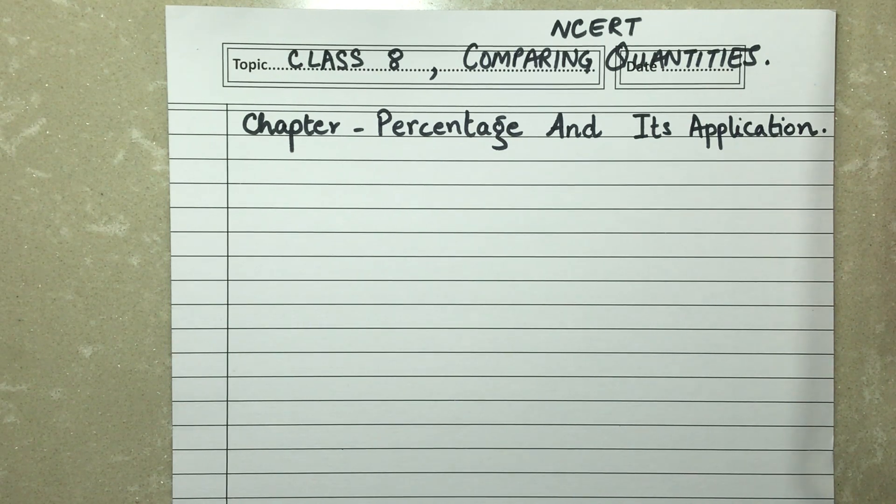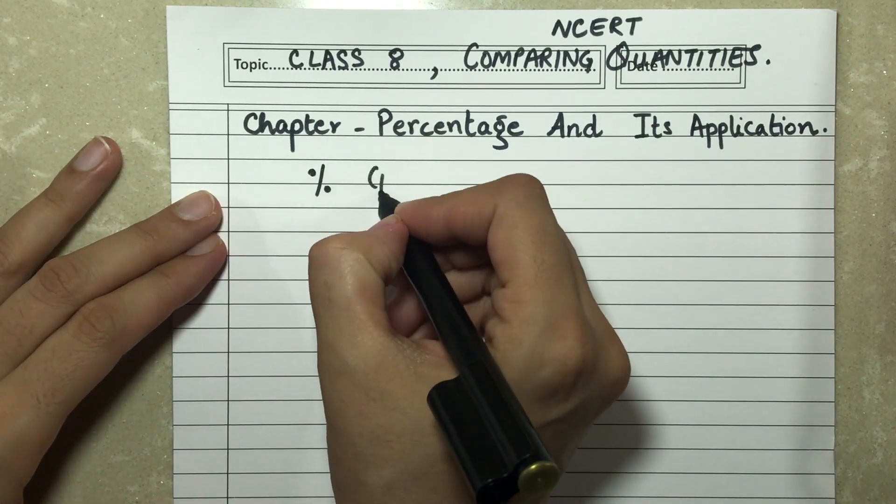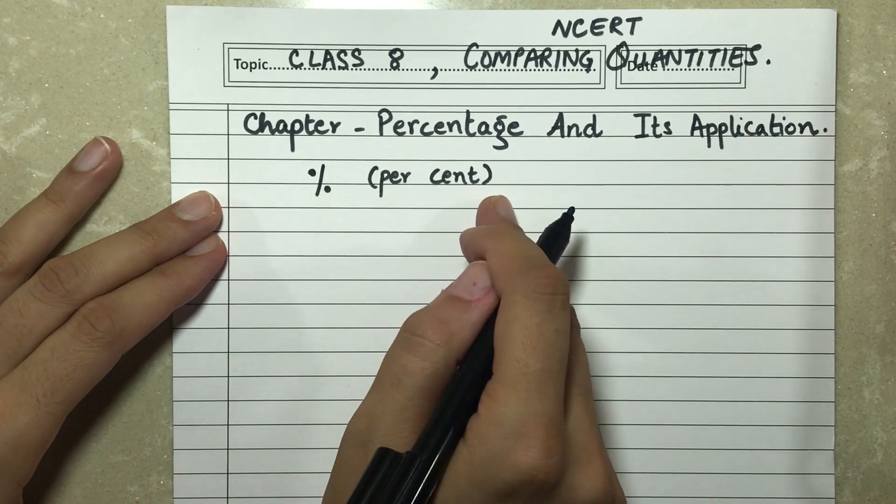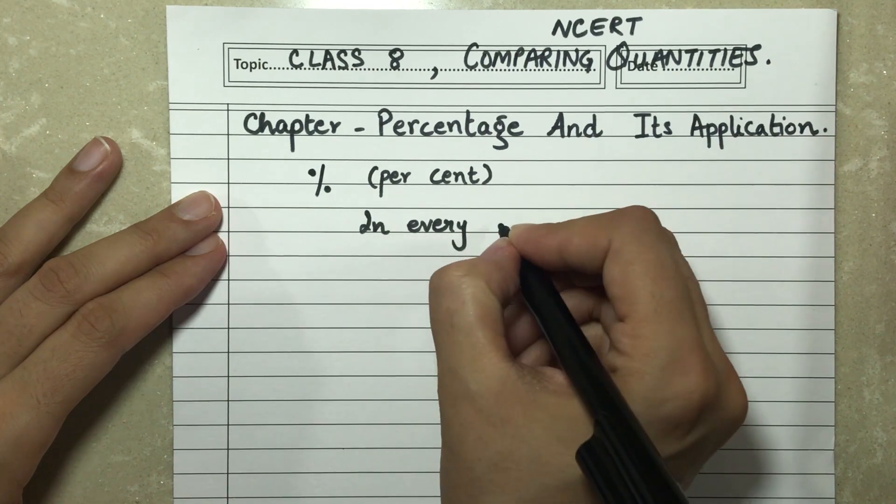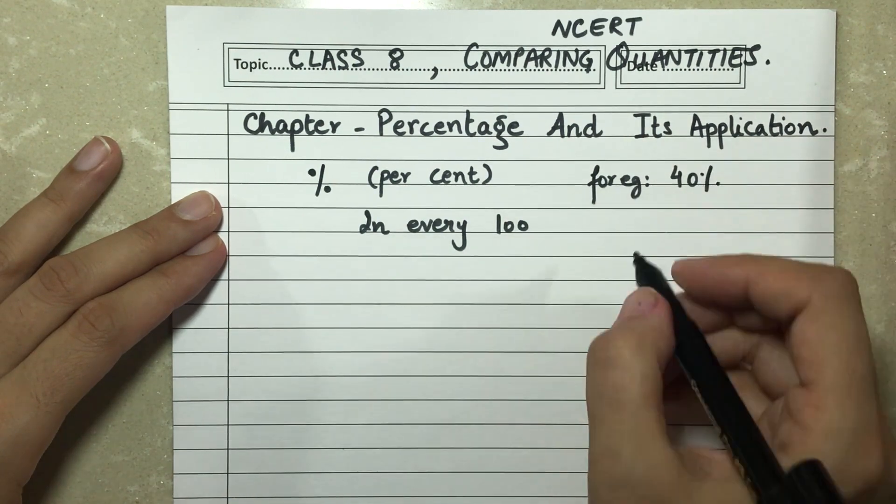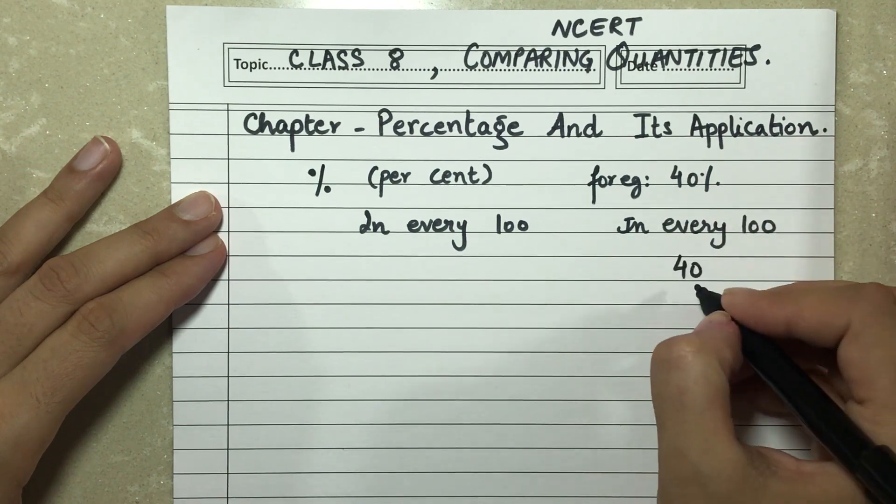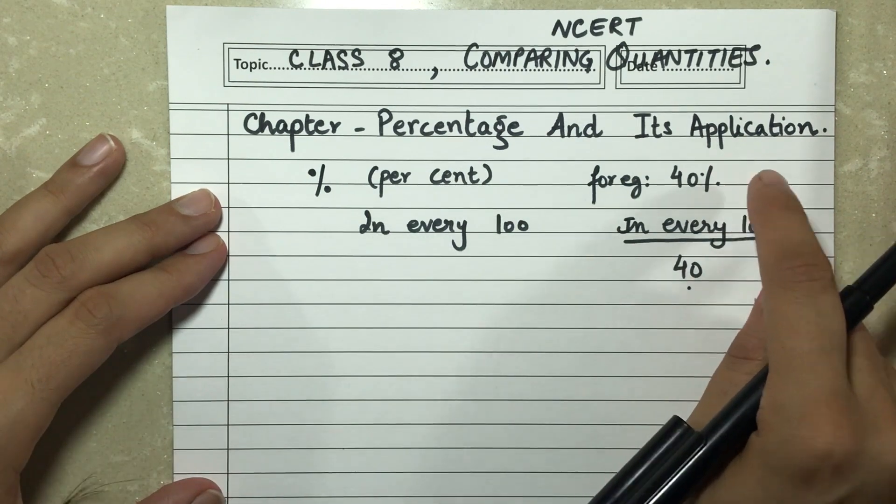So today we are going to study about percentages. We hear percentage a lot in examination results, sales, or discount offers like 10% off. These are examples of percentages in our daily life. What does percent basically mean? The symbol of percentage is this. Per cent means in every hundred. For example, if I say 40%, that means in every hundred I mean 40.